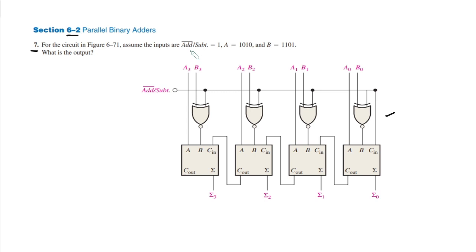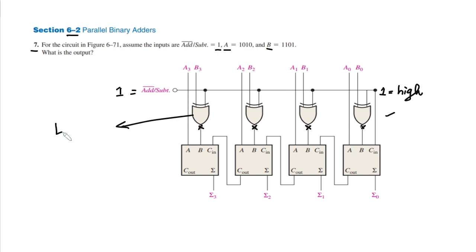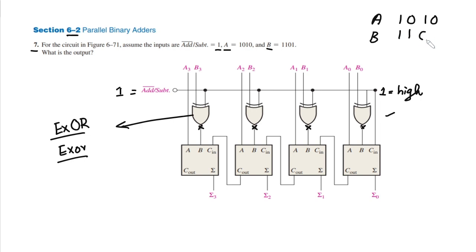Assume the inputs are at subtract equal to 1. So this input is equal to 1 and therefore at this line we will have a high signal of 1. We have two inputs: A is equal to 1010 and B is equal to 1101. We have to find the output. We need to make a correction — this bubble is not available here, and therefore all of these gates are basically XOR gates. So A is 1010 and B is equal to 1101.